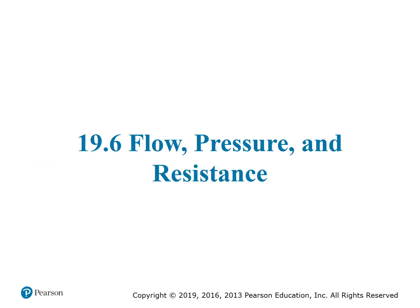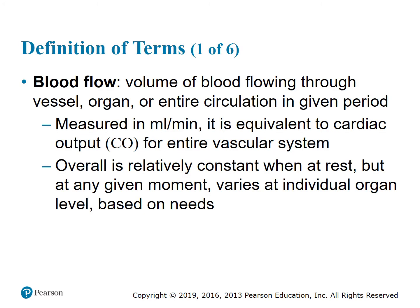Section 19.6: Flow, Pressure, and Resistance. Blood flow is the volume of blood flowing through a vessel, organ, or entire circulation in a given period, measured in milliliters per minute, equivalent to cardiac output for the entire vascular system. Overall it is relatively constant at rest, but at any given moment it varies at the individual organ level based on needs.